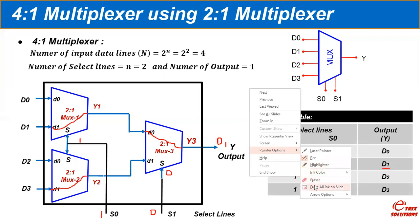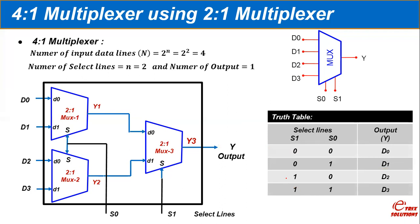Let us skip combination 10 and take combination S1=1, S0=1 directly. When S0 is 1, output Y1 is connected to D1 and Y2 is connected to D3. Because the selection line of multiplexer three is also 1, output Y3 is connected to Y2, and the input data line D3 is connected to the output through this path. Therefore the output Y equals D3, as shown in the truth table.